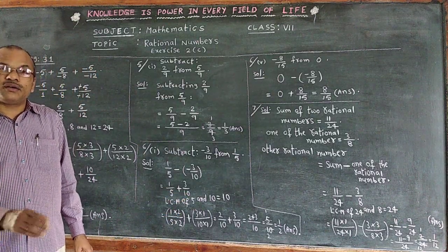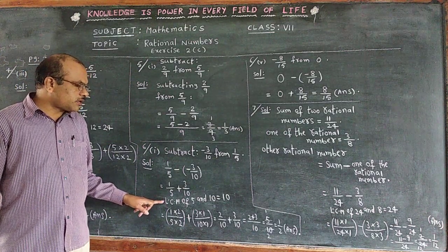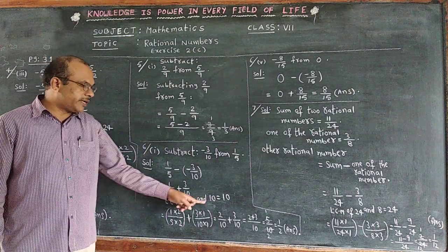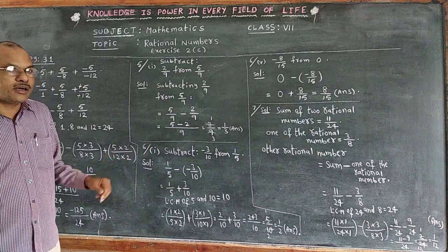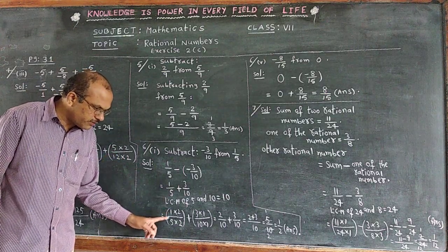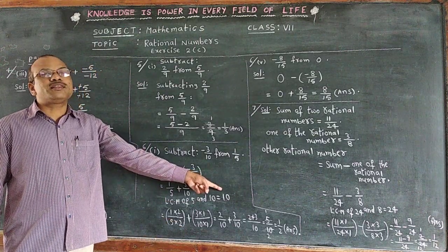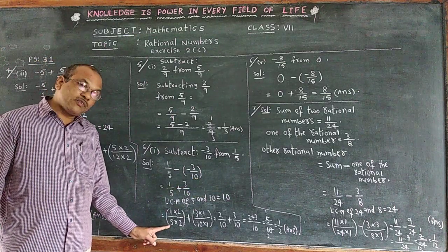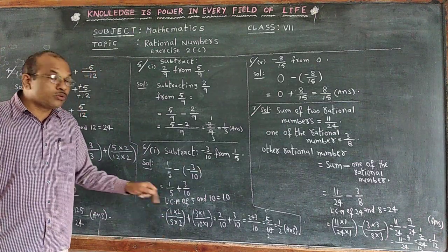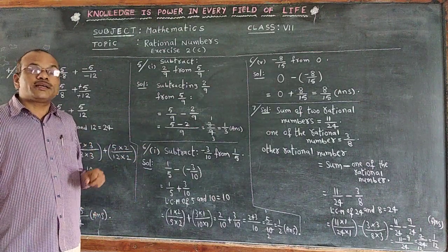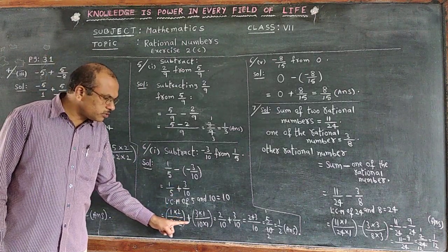Since the denominators are different, we go to the LCM procedure. LCM of 5 and 10 is 10. We want to see 10 in every denominator. For 1 by 5: 5 times 2 gives 10, so we multiply by 2, writing 2 in the numerator also to keep the value unchanged. For 3 by 10: 10 times 1 is 10, so 1 is written in the numerator as well.